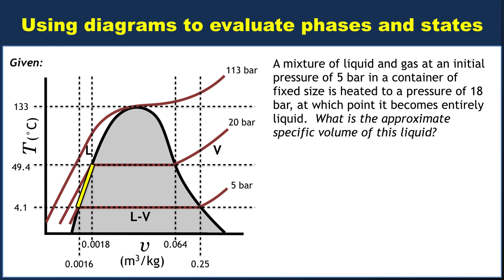If you look down at the specific volume axis, the minimum it could be is 0.0016, the maximum is 0.0018, both in cubic meters per kilogram. That's a good enough answer for what is the approximate specific volume of this liquid. We don't know which of those values, or whether there's an intermediate value for the particular case that we chose, but we can automatically conclude that it has to be in that range. So the approximate specific volume of this liquid must be between 0.0016 and 0.0018 cubic meters per kilogram.